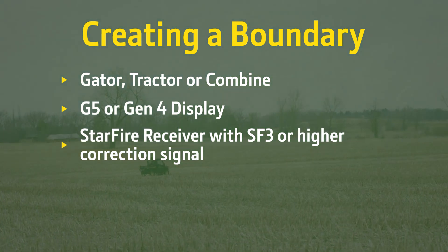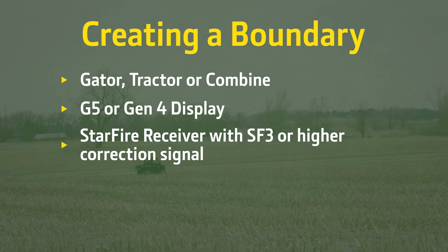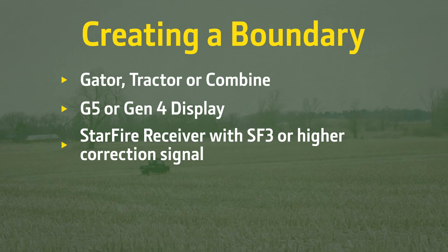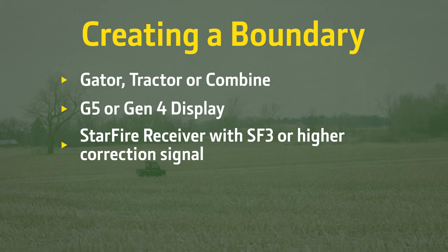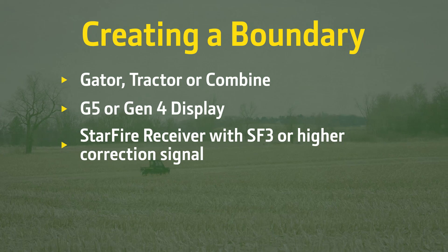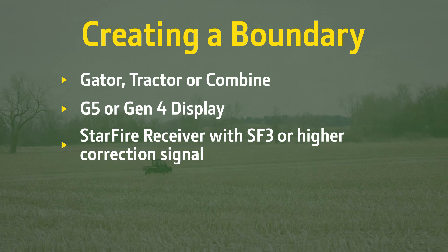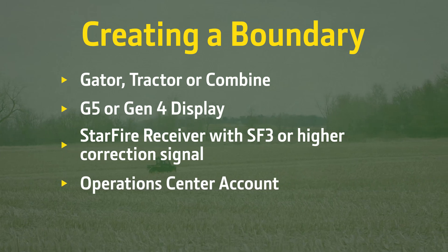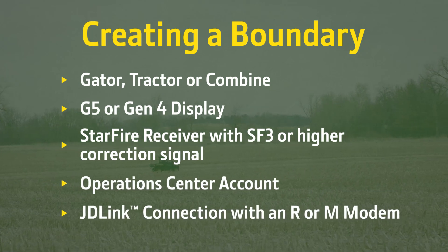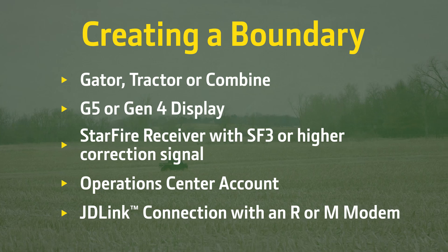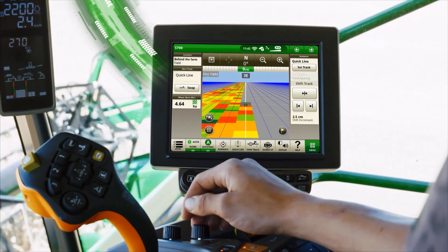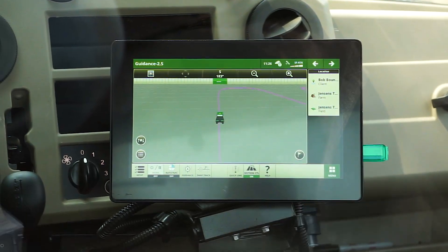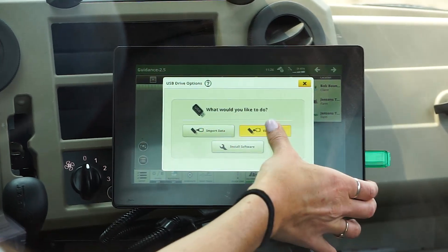Pro tip number one: we recommend recording your boundary with SFRTK correction signal for long-term repeatability. Pro tip number two: use the same correction signal when creating and using the boundary — do not mix and match correction signals. You will also need an Operations Center account. A JD-Link connection with an R or M modem is highly recommended but not required. A connected machine will allow data to be transferred to the Operations Center automatically over the air, versus manually transferring with a USB drive, which we will cover later in this video.